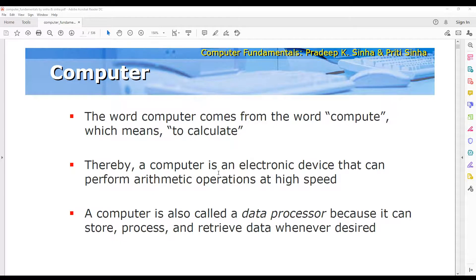Thereby a computer is an electronic device that can perform arithmetic operations at high speed. Basically computer is a machine or electronic device which can perform arithmetic operations, suppose addition, subtraction, division, multiplication. These are the basic arithmetic operations, but computer can do it at very high speed.